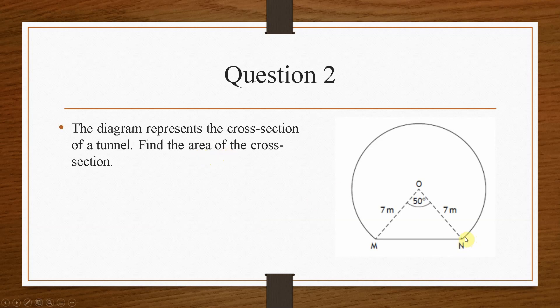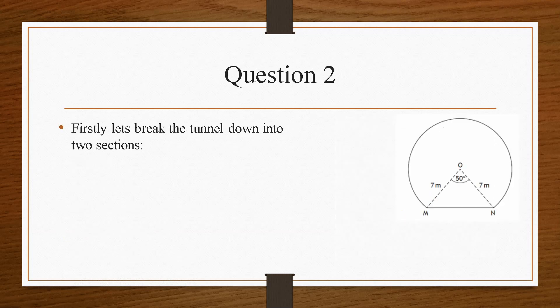Now, again, we'll specify what information we've been given. So the center is O, MN is a chord of the circle, which means it is the radius between here and here. The angle MON is 50 degrees, and the radius is 7 meters.